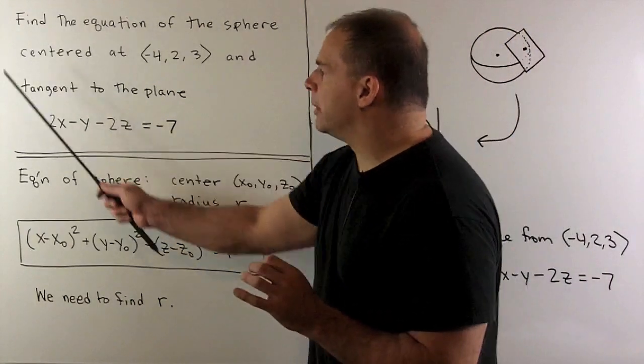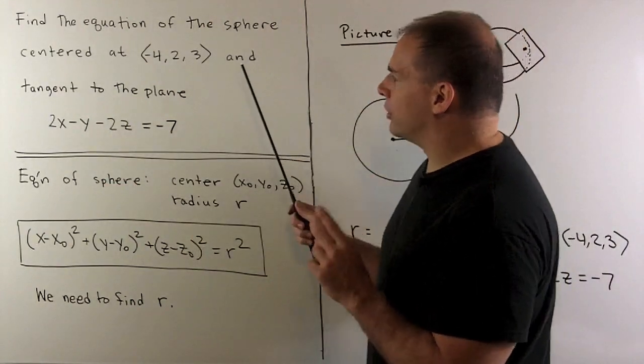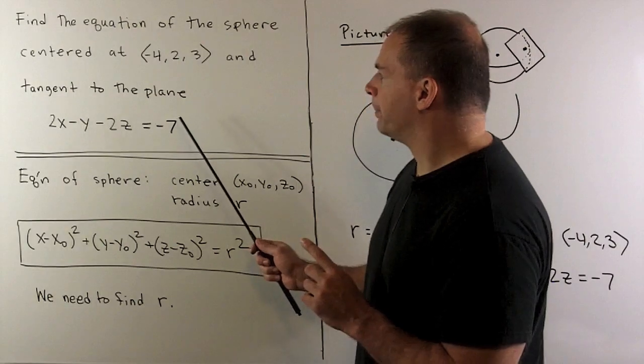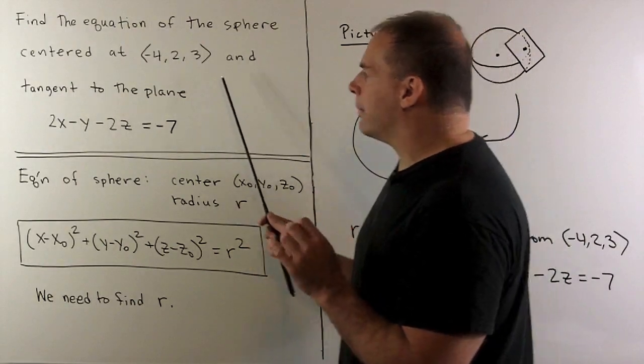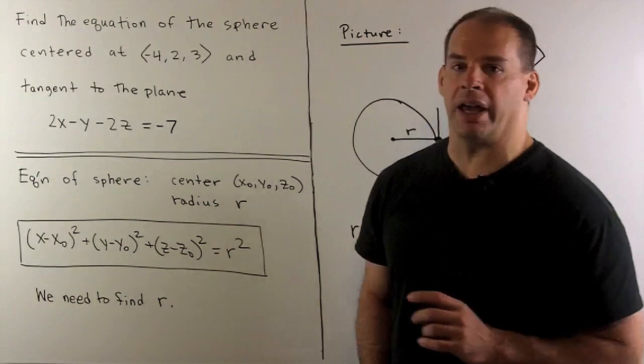If I go through the problem again, it's not clear how to get the radius from the information given. So we're going to have to figure out how to make use of this business of tangent to this plane.